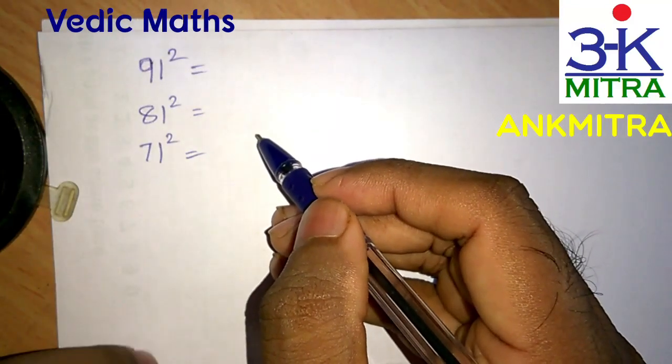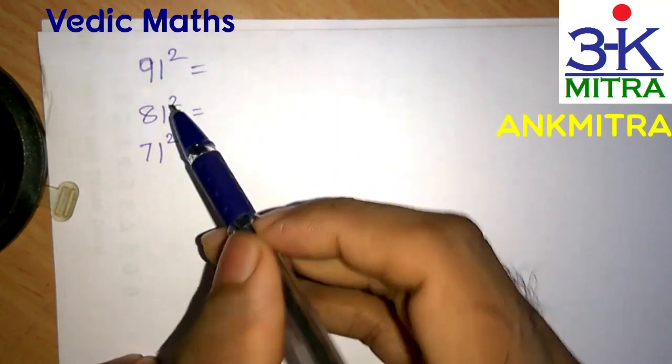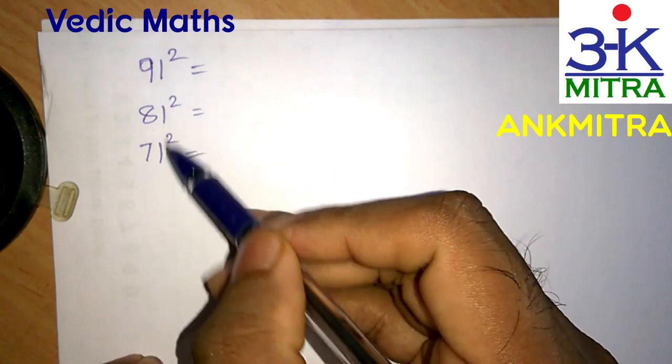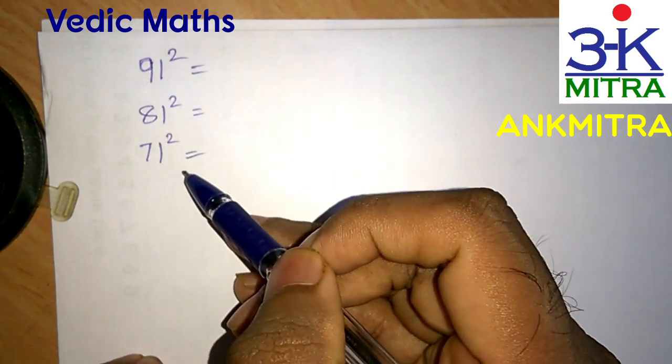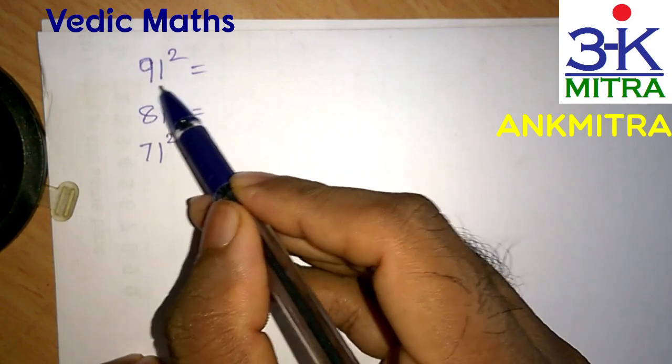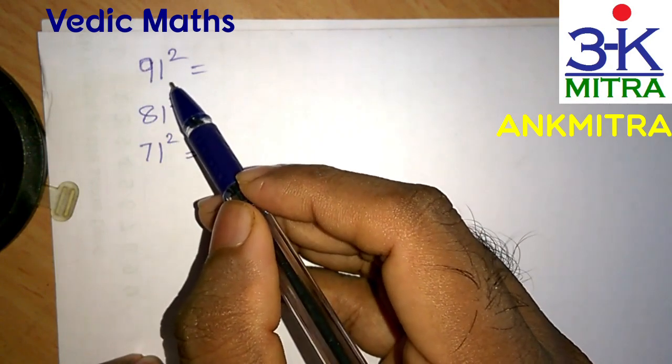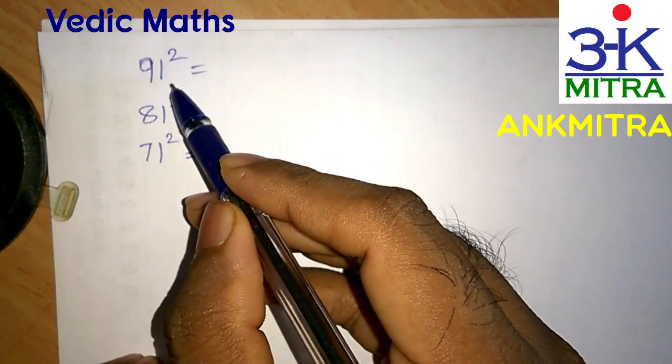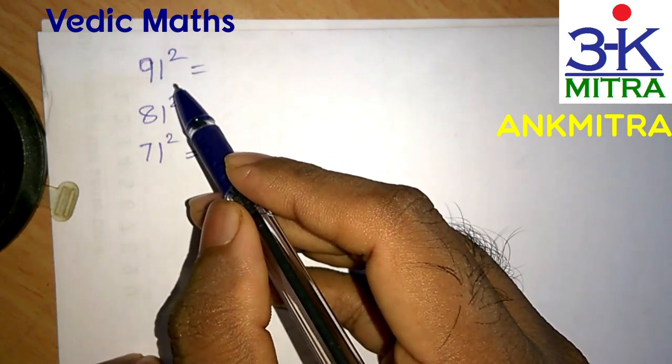Hello everyone, in this video I will show you how to find the squares of certain numbers in just three or four seconds. Let's look at the first example: 91 squared. To find the square of 91, there is a very easy Vedic math trick involved.